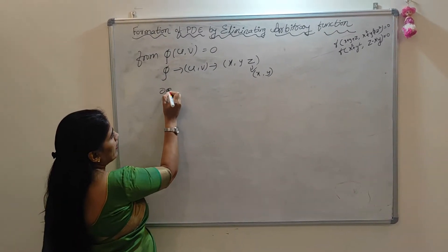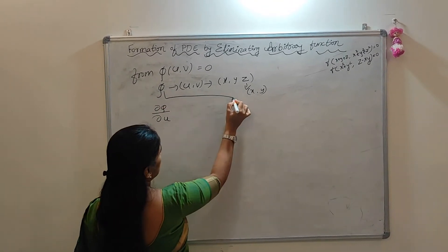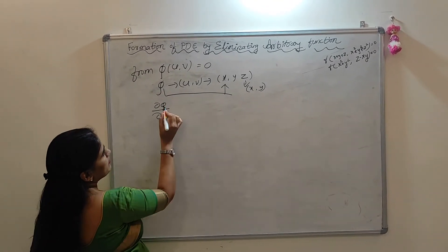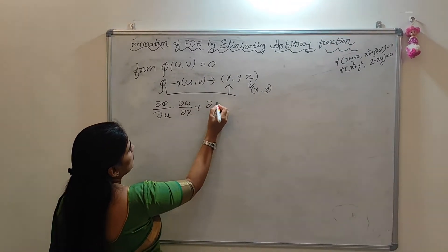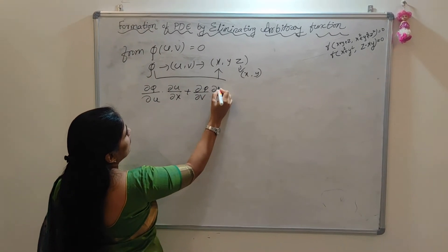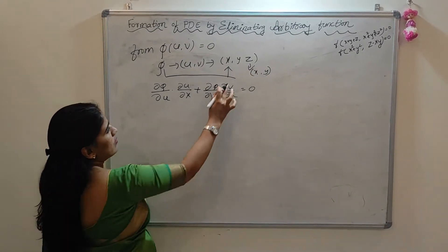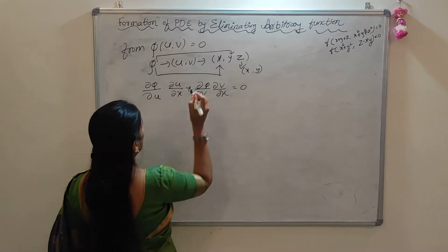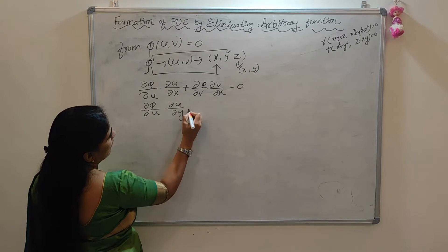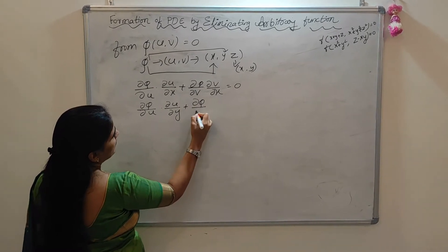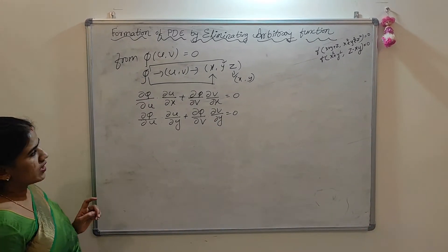By the chain rule: ∂φ/∂x = (∂φ/∂u)(∂u/∂x) + (∂φ/∂v)(∂v/∂x) = 0. Similarly, ∂φ/∂y = (∂φ/∂u)(∂u/∂y) + (∂φ/∂v)(∂v/∂y) = 0. This is the chain rule applied to both x and y directions.